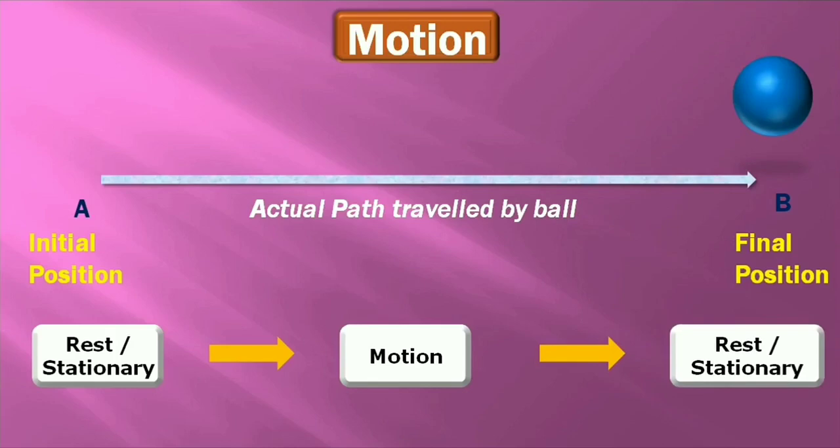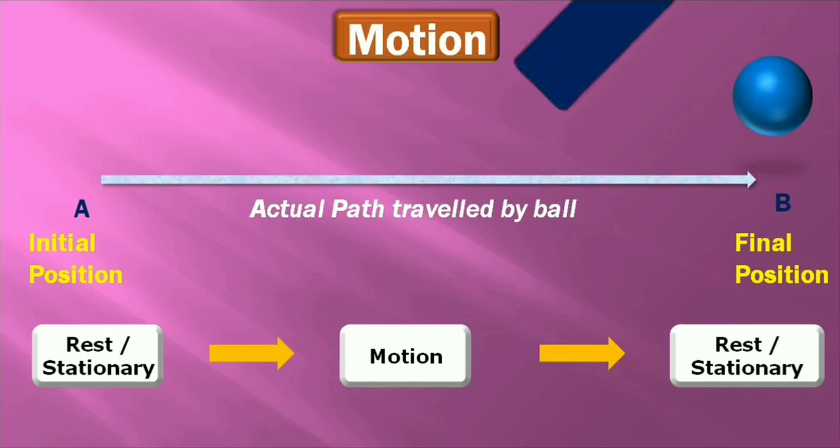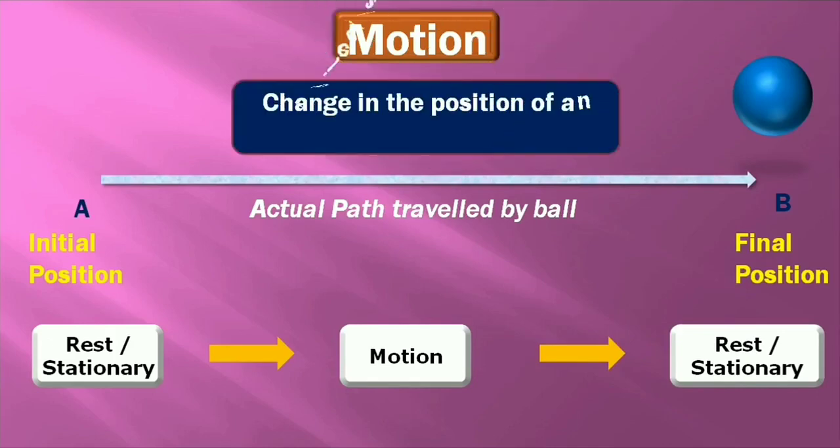So we can conclude: the ball is changing its position, so we can say the ball is in motion. Change in the position of an object is called motion.